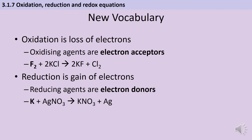The first new piece of information is some new vocabulary. If an element loses some electrons it's been oxidised, but those electrons must have gone somewhere — there's going to be another chemical that is accepting those electrons, and we're going to call that the oxidising agent. It's the thing that is oxidising the first element. Here's an example: we've got some fluorine displacing some chloride ions from some potassium chloride, and the fluorine is accepting the electrons that have come from those chloride ions, so we're going to call it an oxidising agent.